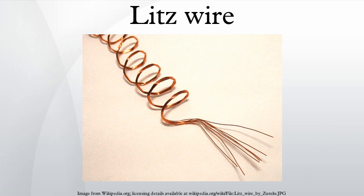Round conductors larger than a few skin depths don't conduct much current near their axis, so the central material isn't used effectively. When larger area conductors are needed, measures are taken to reduce skin effect. One method is the use of a hollow pipe with a conducting wall with a thickness approximately that of the skin depth at the intended frequency. Litz wire is another method, which employs a stranded wire with individually insulated conductors. Each thin conductor is less than a skin depth, so an individual strand does not suffer an appreciable skin effect loss.